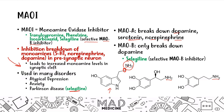You just need to memorize selegiline as the MAO-B inhibitor, and tranylcypromine, phenelzine, and isocarboxazid as MAO-A oxidase inhibitors.